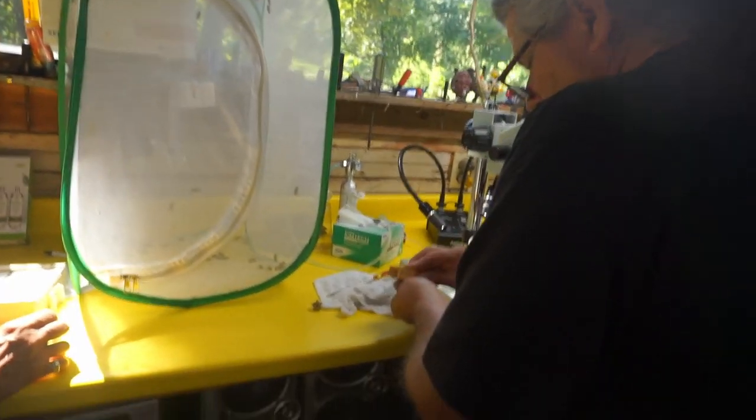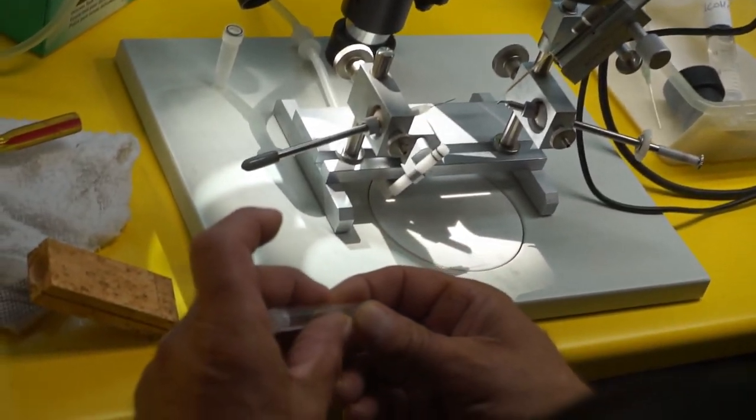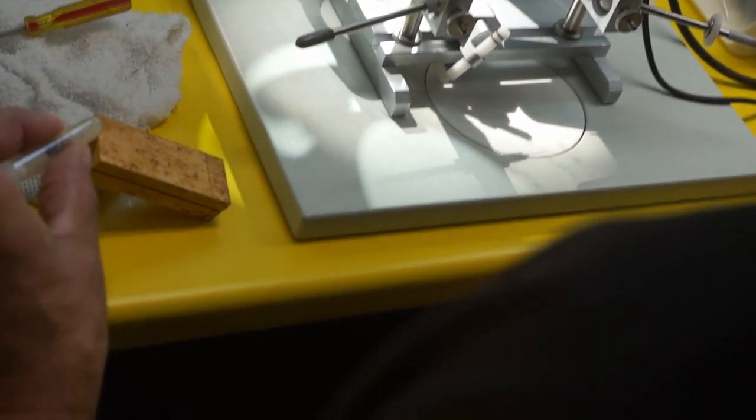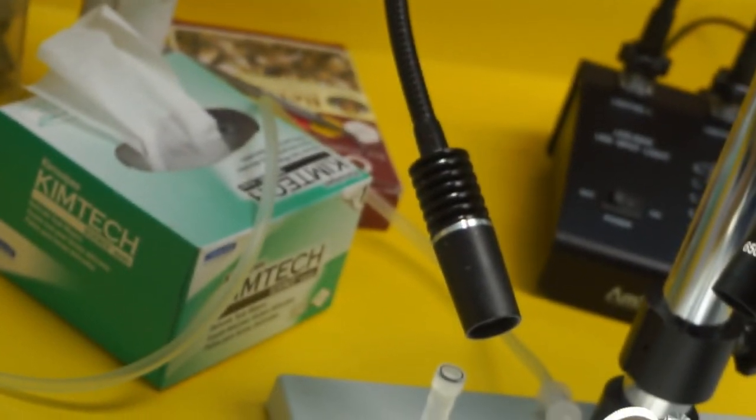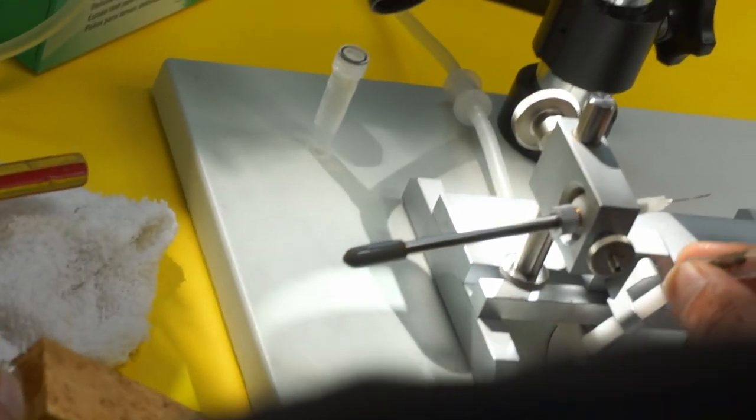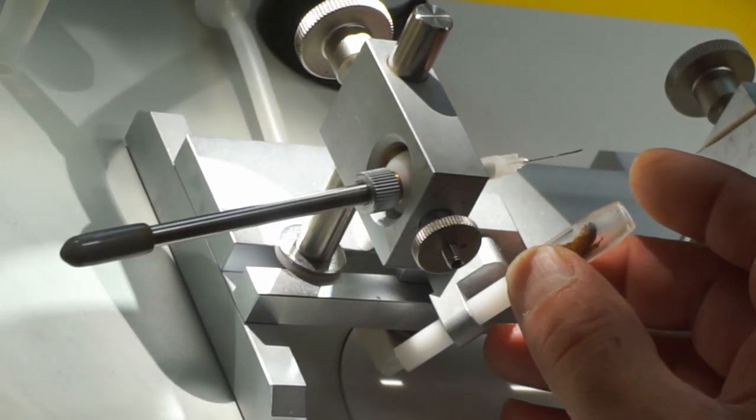So these queens came from the breed of queen. So she goes in the tube and then she'll reverse back into this. So she'll back in there? Yeah, she's supposed to back in there. She didn't read the directions. Perfect.